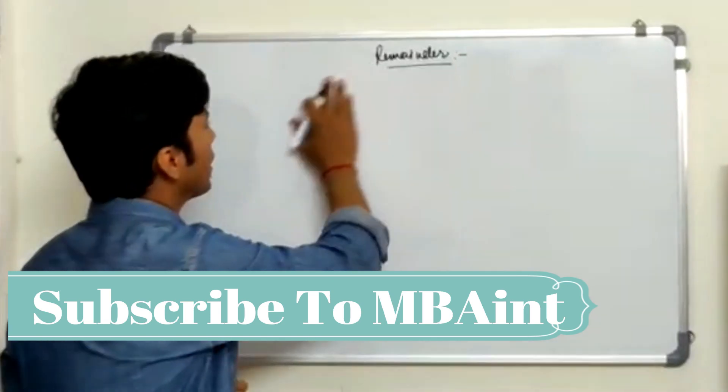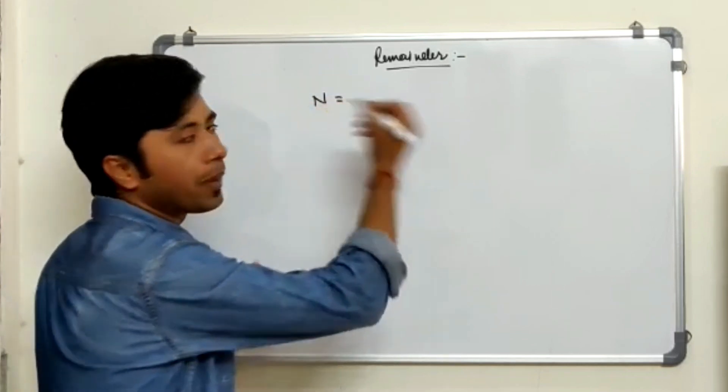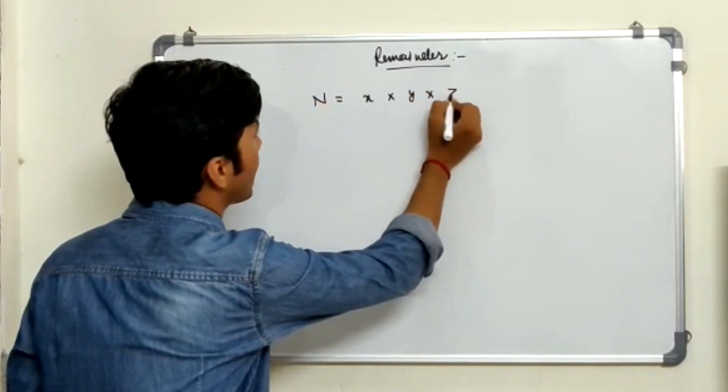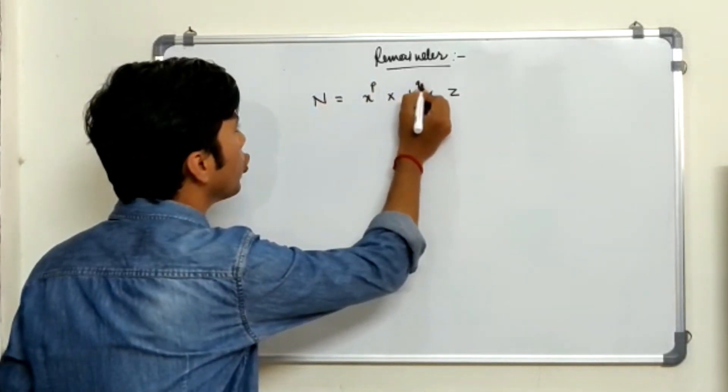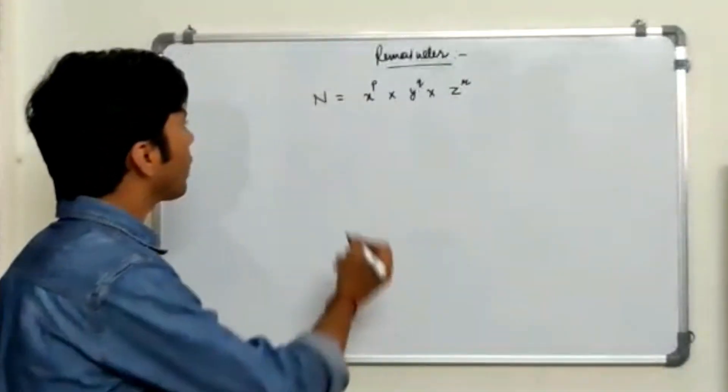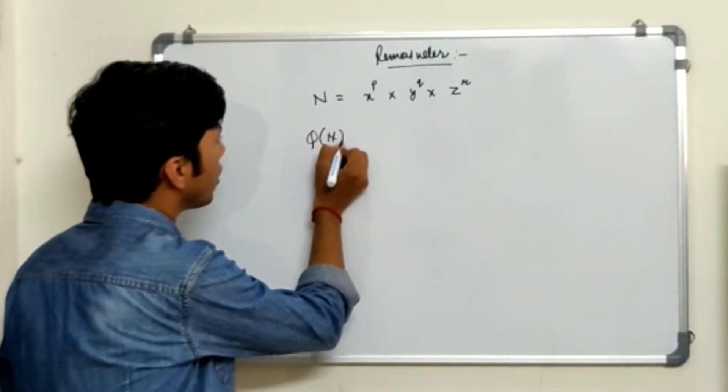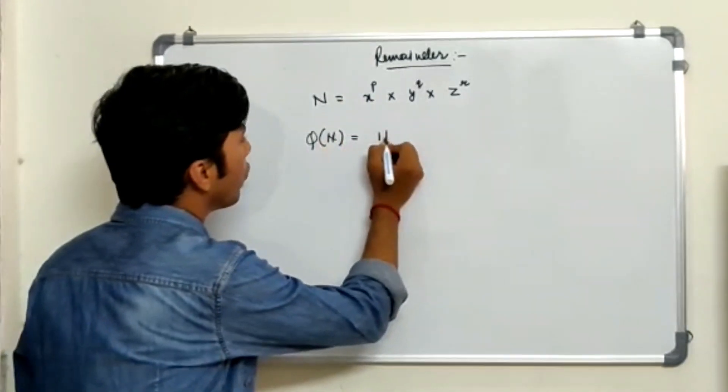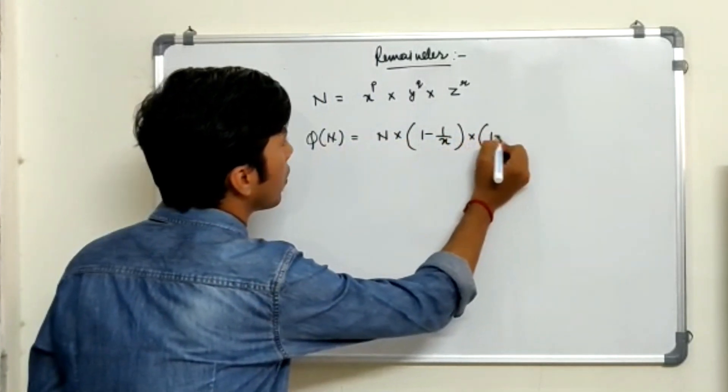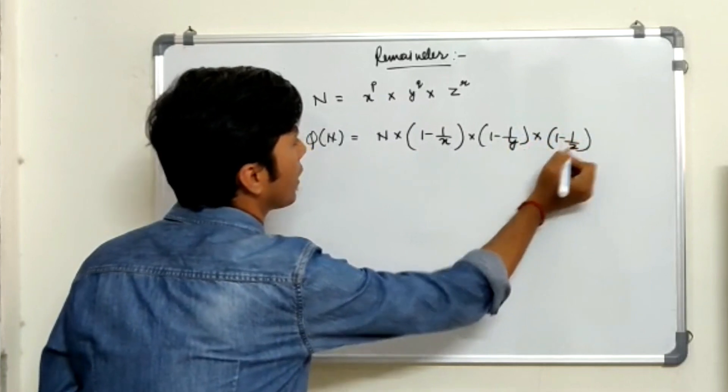Before using Euler's theorem, we need to know what Euler's theorem is basically. Now guys, let's say if I take a number n and if I am breaking this into prime factors. So this is x into y into z with powers p, q, and r. So now what Euler's theorem does is it finds the totient of a number. The totient of a number will be n times 1 minus 1 upon x into 1 minus 1 upon y into 1 minus 1 upon z.